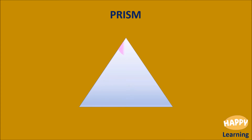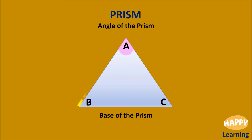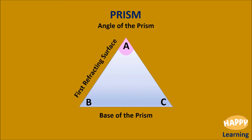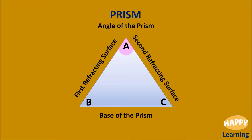This is a prism. This is one angle of the prism. BC is the base of the prism ABC. AB is one of the refracting surfaces. AC is the second refracting surface.